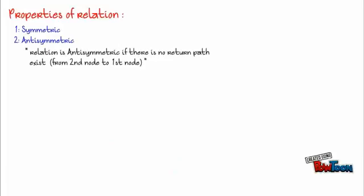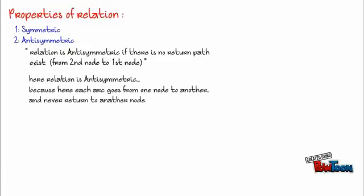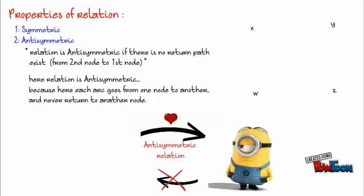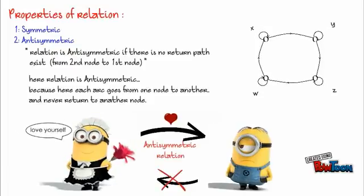Next property is anti-symmetric. It is opposite to the symmetric property. Relation is anti-symmetric if and only if there is no such direct return path exists. In example, arc exists from x to y but not from y to x. It shows anti-symmetric property.